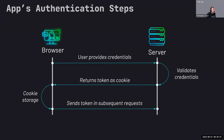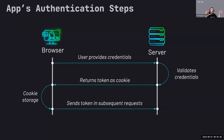Here are the application authentication steps: the user comes to a browser, provides credentials, sends them to the server, the server validates the credentials, and returns the token as a cookie. The browser stores that cookie and sends the token in subsequent requests to the server to get further data back. Essentially you have the client side doing the rendering and the back end doing session validation.